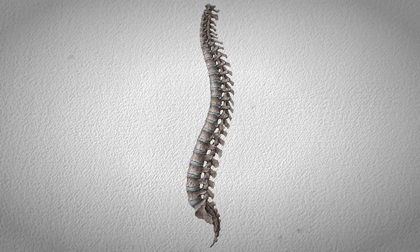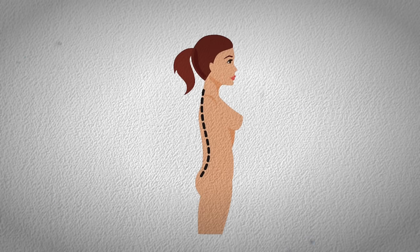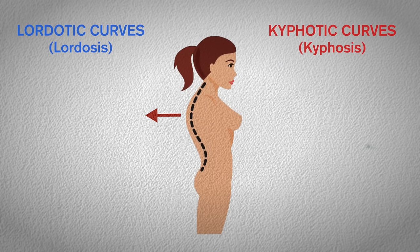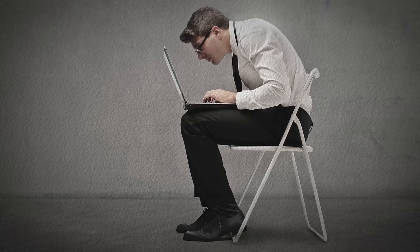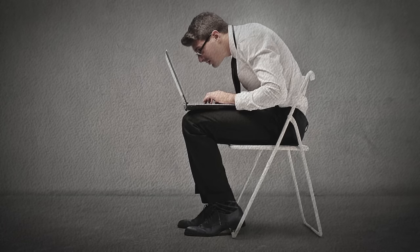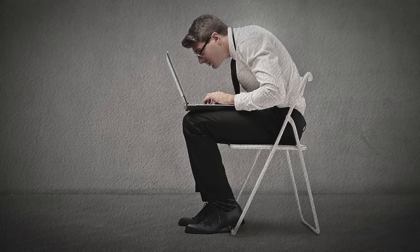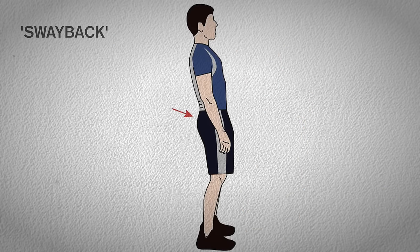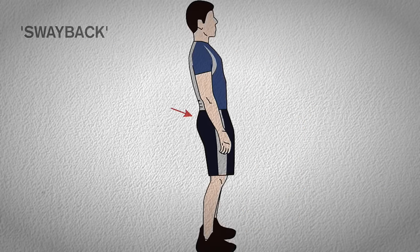Back to the fully formed spine — you may have noticed the posture of some people, and this could be you too, is rather exaggerated. Whether due to lordotic curves or kyphotic curves, this excessive or abnormal spine curvature can be caused by poor posture or spinal diseases.